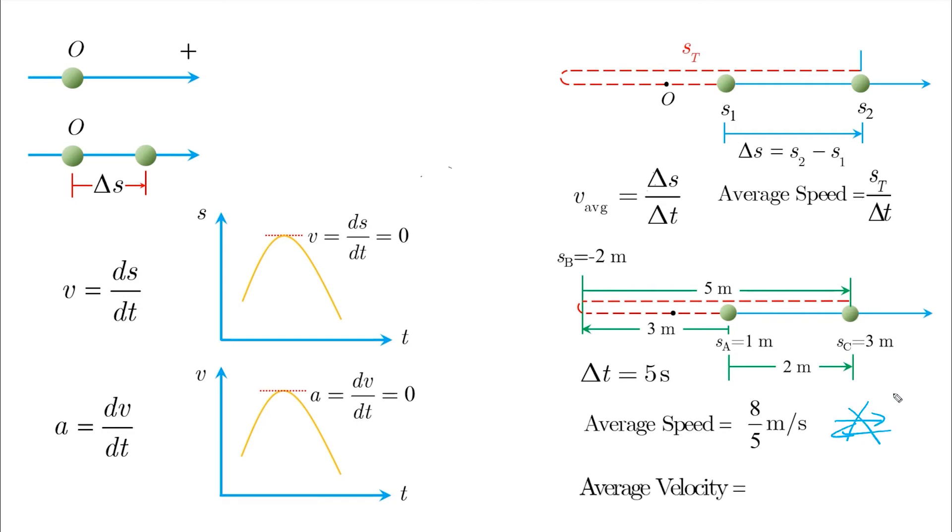But the average velocity is two over five meters per second to the right because delta s is defined positive to the right. Note that the turnaround means a complete change in direction of motion, and when this change happens, the velocity must be equal to zero at that point.